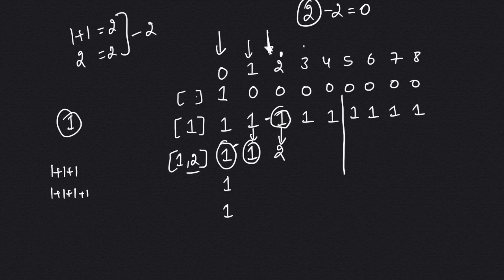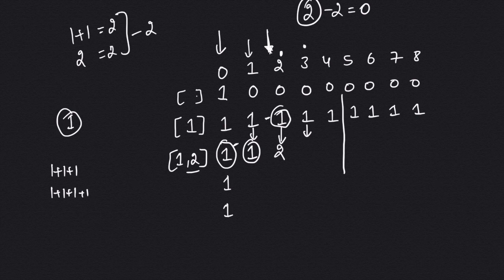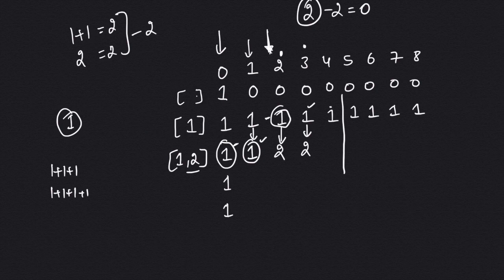For amount 3, I have two options: either use coin of 2 or not. Not using 2: take value from above, which is 1. Using 2: reduce amount - 3 minus 2 is 1 - and check combinations to form 1 using coins 1 and 2, which is 1. So 1+1=2. For amount 4: not using 2 gives 1, using 2 means 4 minus 2 is 2, and combinations at 2 is 2. So 2+1=3.